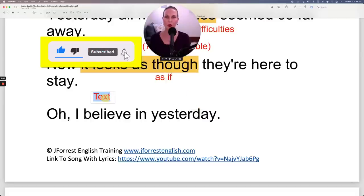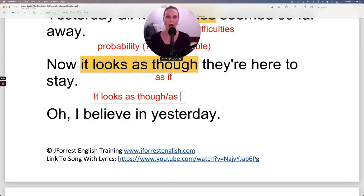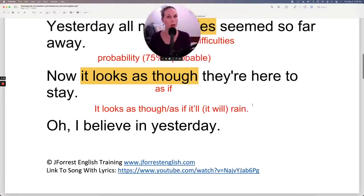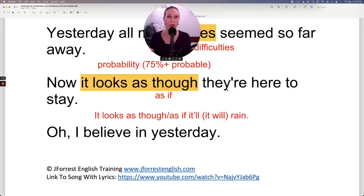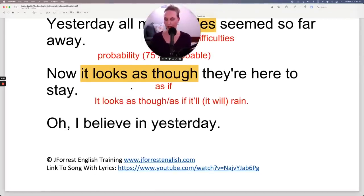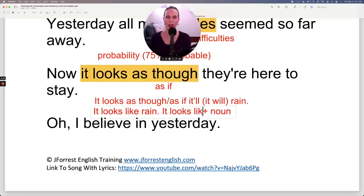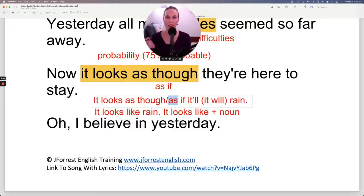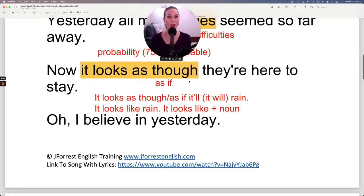Now, to show you an example sentence, you could say it looks as though or as if it'll rain. Notice I used a contraction. It'll rain. The full form is it will rain. So again, I might look out my window, see some dark clouds, and then say, oh, it looks as if it'll rain. I'm saying it's about 75% probable. You can also use it looks like. And in this case, you could say it looks like rain. A little difference when we use it looks like. Generally, what comes next is a noun. So in this case, rain is a noun. It looks like plus noun is more common when you use it looks like. And then when you use it looks as though, as if, we have a clause. It looks as though they're here to stay.